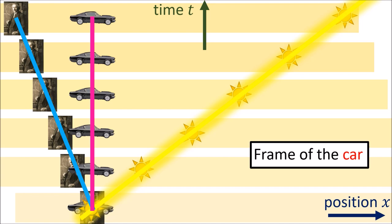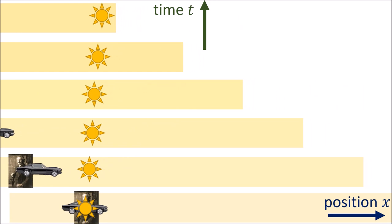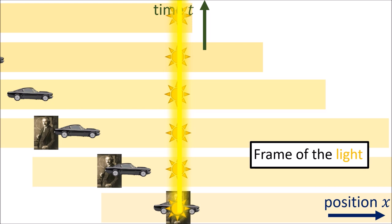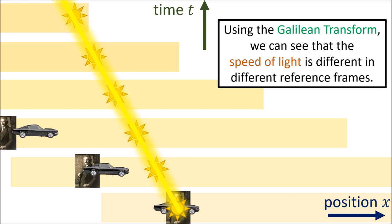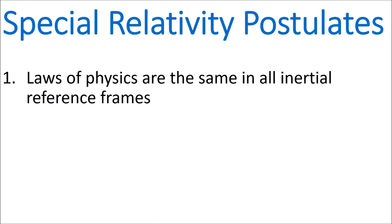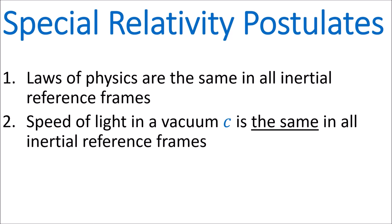We can also rearrange the time slices so that the beam of light has a vertical world line, meaning the beam of light's position is constant and standing still. We can even change the reference frame so that it is going faster than light, and now the beam of light appears to be traveling left because it's not traveling fast enough to keep up with the reference frame. This method of changing reference frames is called the Galilean transformation. Using the Galilean transformation, we can see that the speed of light is different in different reference frames. But this goes against Einstein's second postulate of special relativity, that the speed of light in a vacuum is constant in all reference frames.